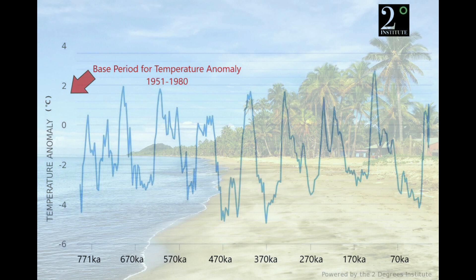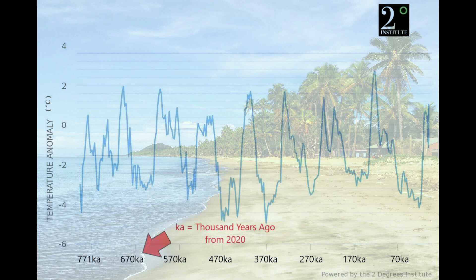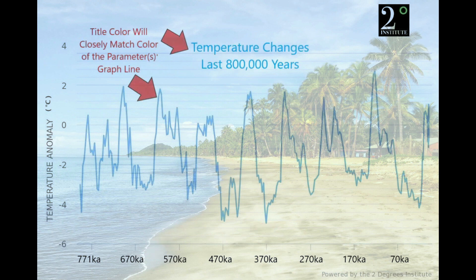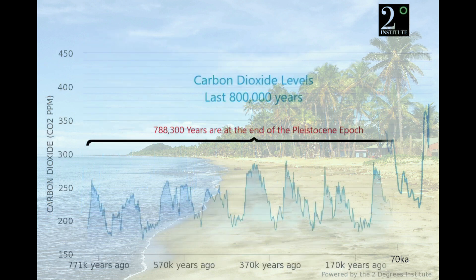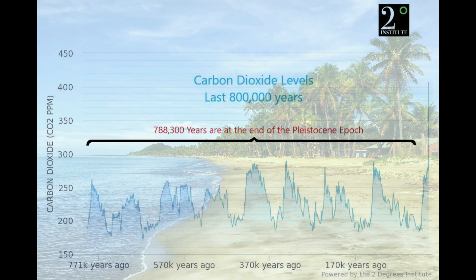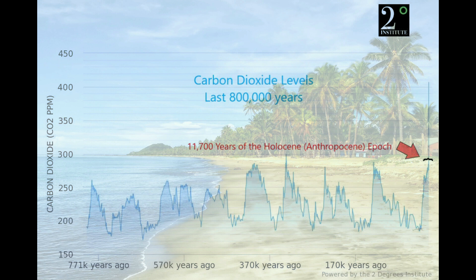A few things to note as we proceed: the temperature anomaly was based on a 30-year period. 'KA' stands for 1,000 years ago from 2020. The title color will closely match the color of the parameters on the graph line. The majority of this 800,000-year span — 788,300 years — is at the end of the Pleistocene epoch, with the remaining 11,700 years from the Holocene, our current epoch.